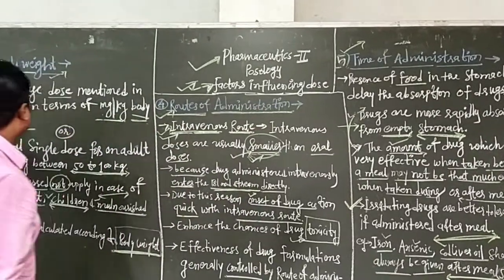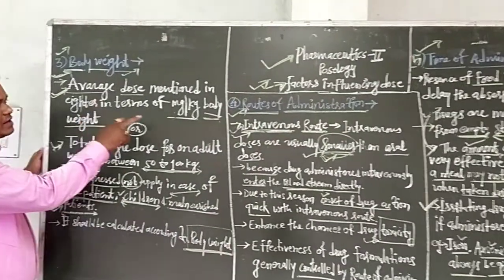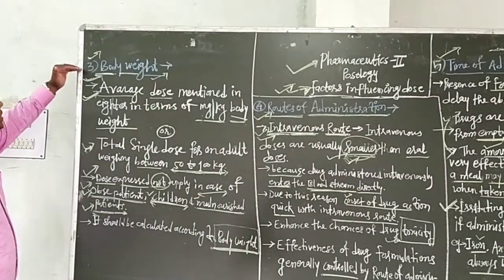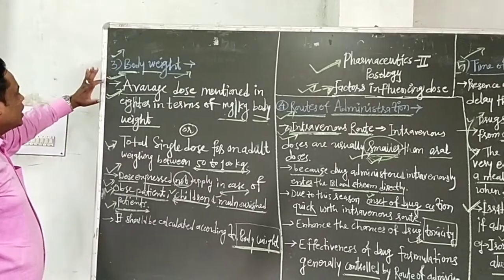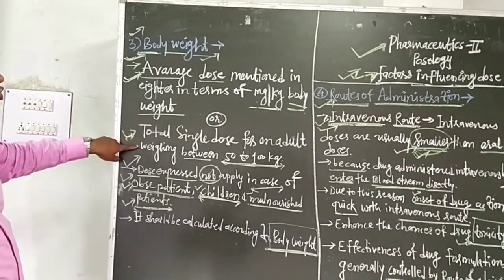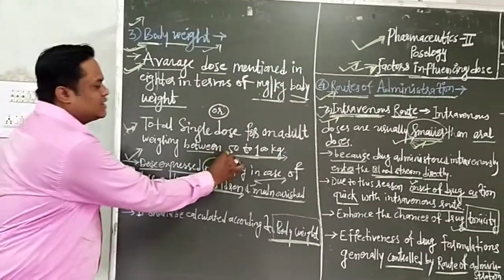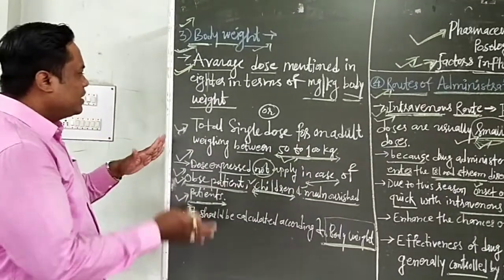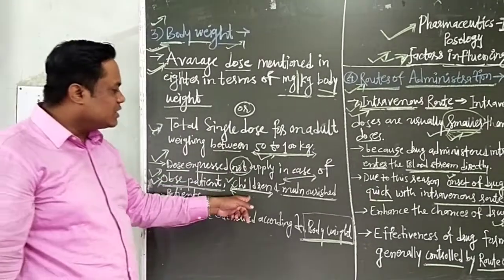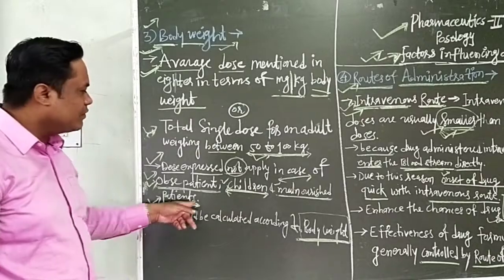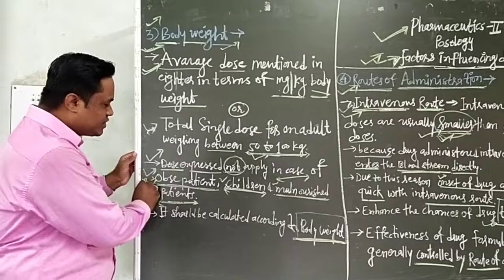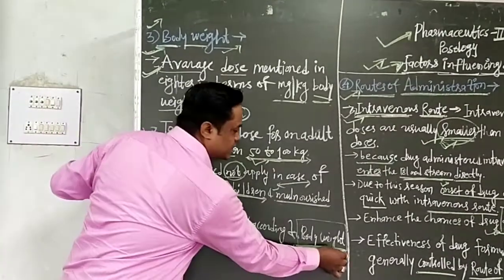In this lecture we covered three factors influencing the dose of drugs. First is body weight. According to standards, the body weight dose should be expressed either in mg per kg of body weight, or as a single dose for adults ranging between 50 to 100 kg. But if the weight differs — for obese patients the weight is very high, for children the weight is very low, and for malnourished patients the weight differs from the standard — then for these patients the dose should be calculated according to their individual body weight.